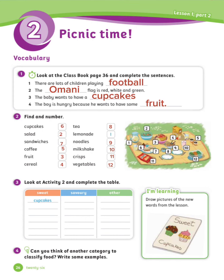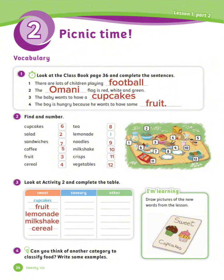Exercise number 3. Look at Activity 2 and complete the table. We're going to sort the words in Activity 2 into three different categories: Sweet, Savory, Other. The sweet foods are: cupcakes, fruit, lemonade, milkshake, cereal.